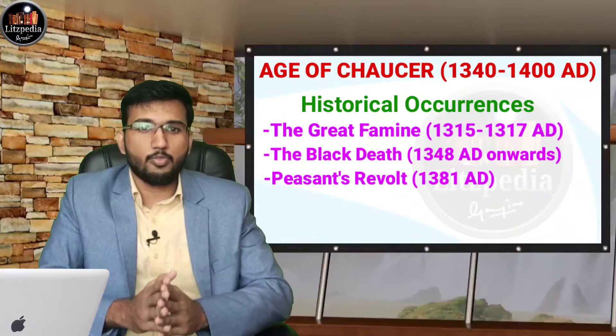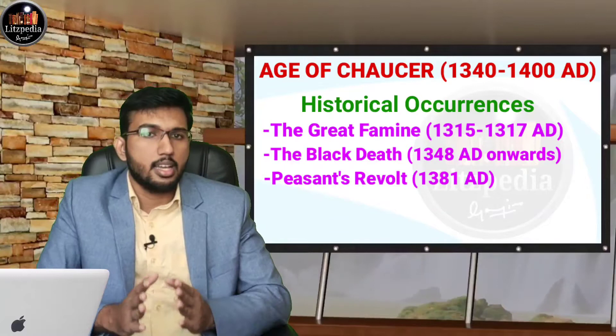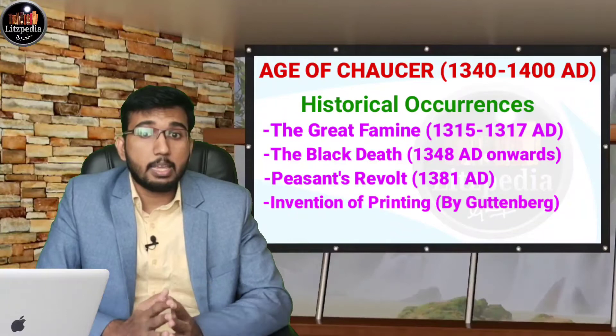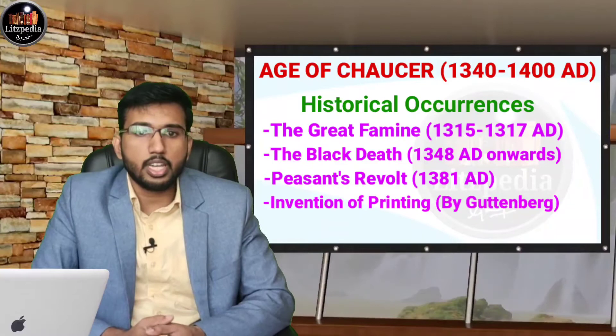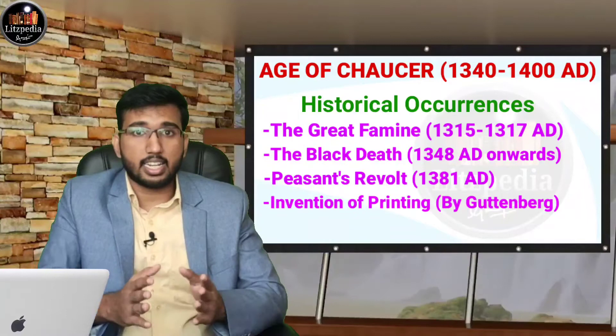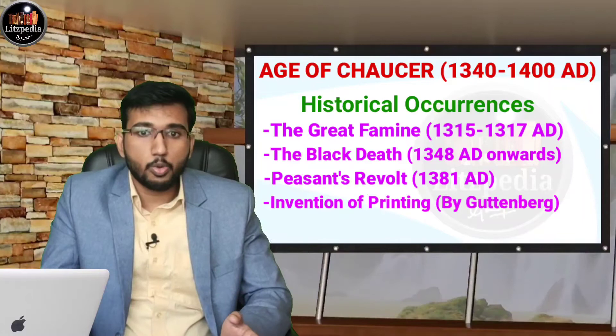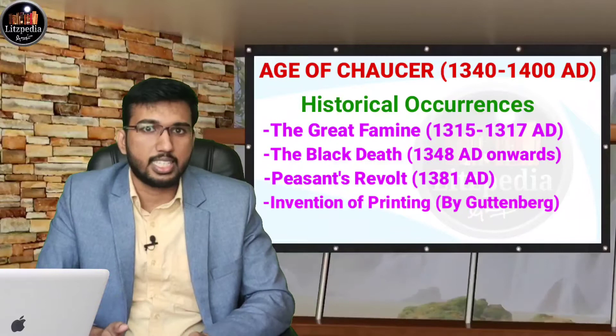Another important historical event during the Age of Chaucer is the invention of printing. The movable type printing was introduced into Europe by German artisan Johannes Gutenberg. The first printed book in Europe produced by Gutenberg was the Vulgate Bible, published in 1456, and it is now called the Gutenberg Bible. William Caxton is connected with printing in Britain.